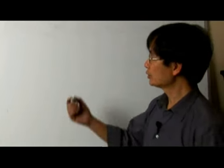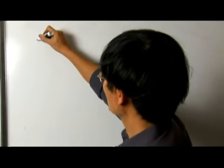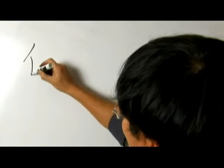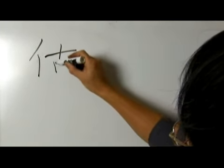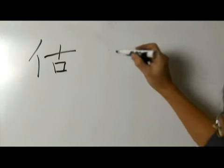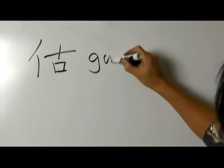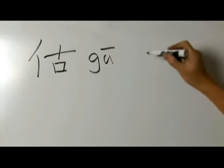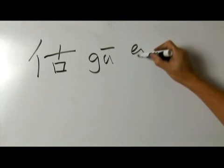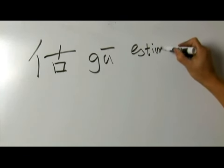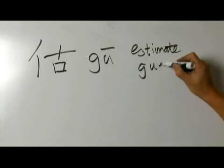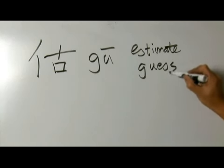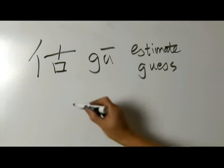Next character is gu. Gu means estimate, guess, like in guji.